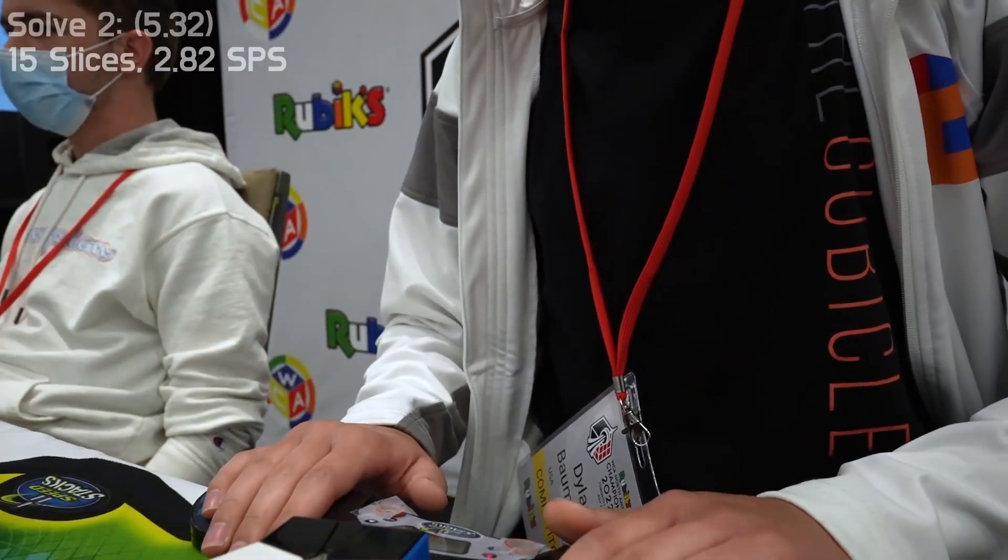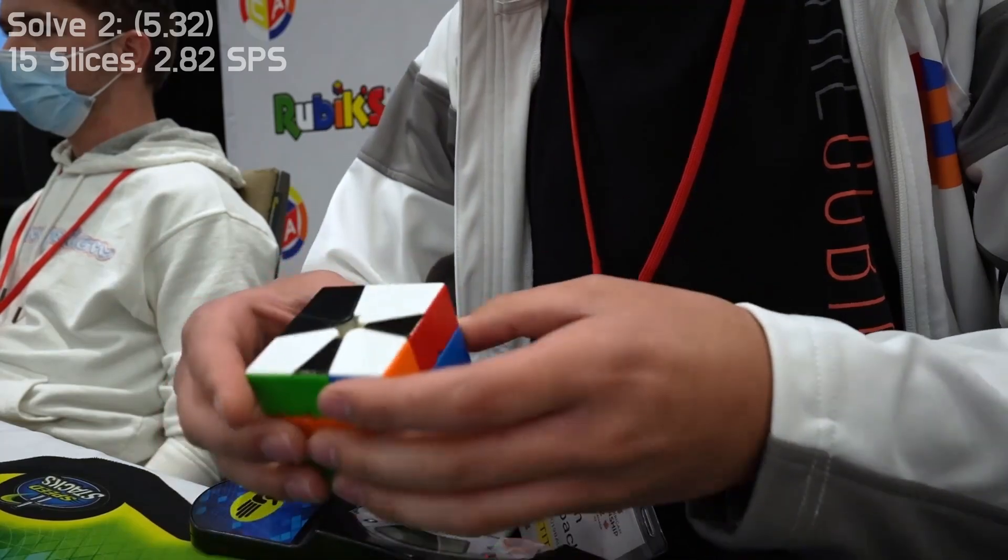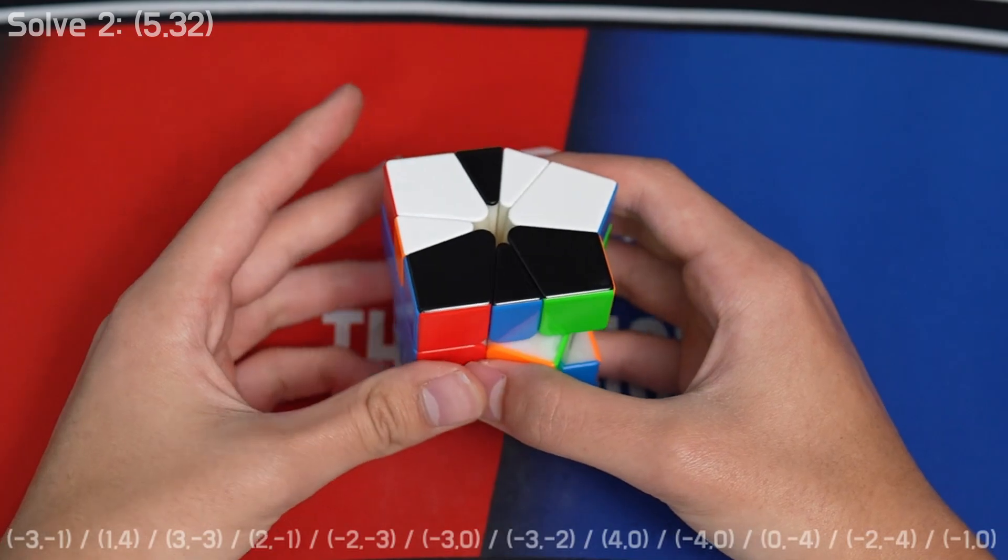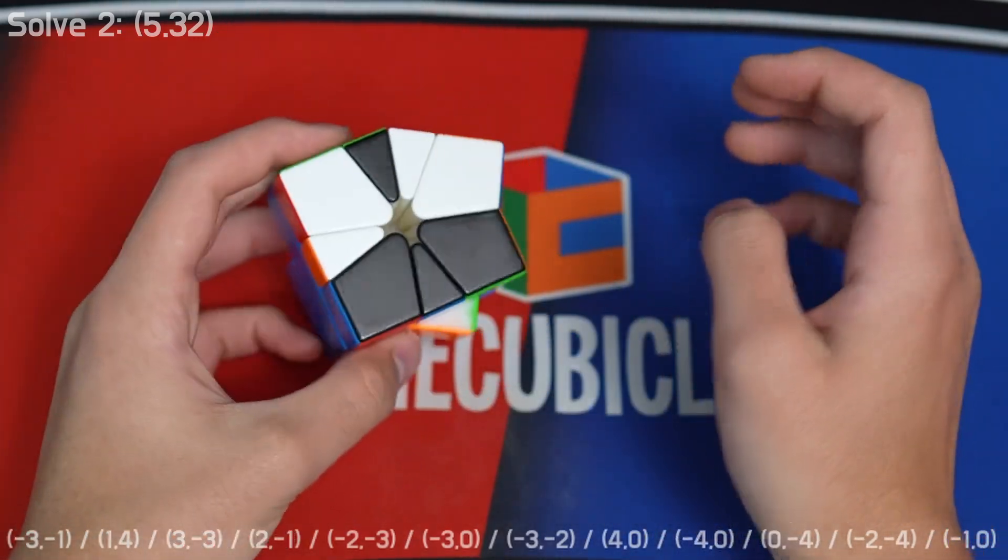All right, second solve was my best solve, a 5.32. And I saw that I had similar fist, but unfortunately it was the bad dog.